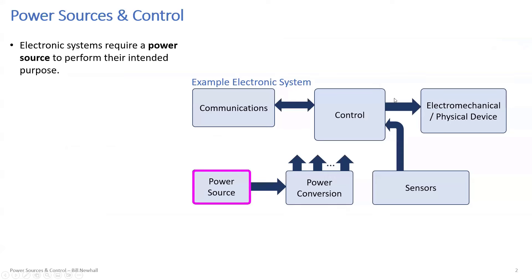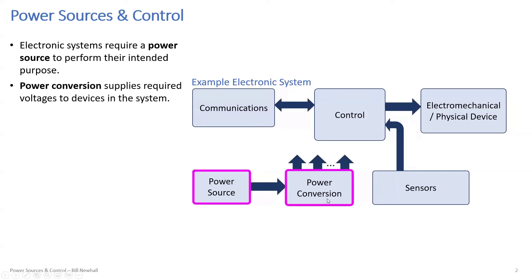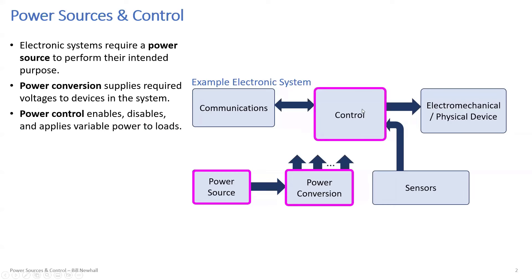Every practical circuit that I can think of requires some kind of power source to perform its intended purpose. We're going to talk about power conversion — converting voltages from the source to voltages that can be used by circuits or subsystems — and power control, which enables, disables, and applies variable power or variable voltage to loads.